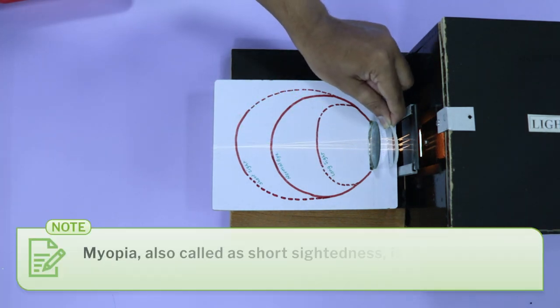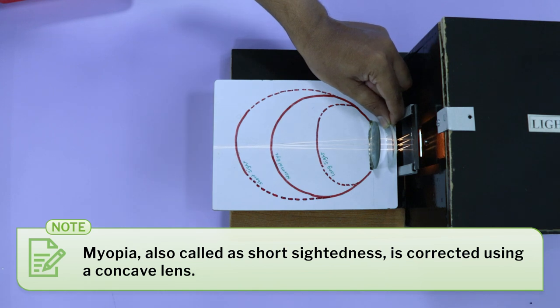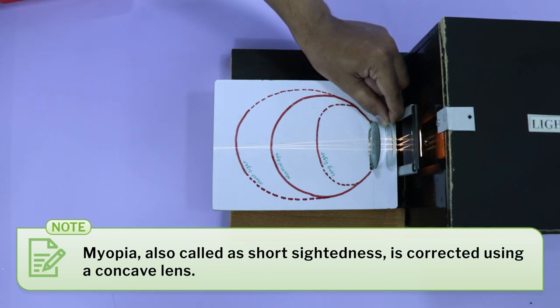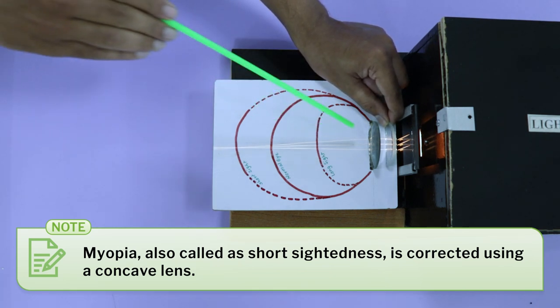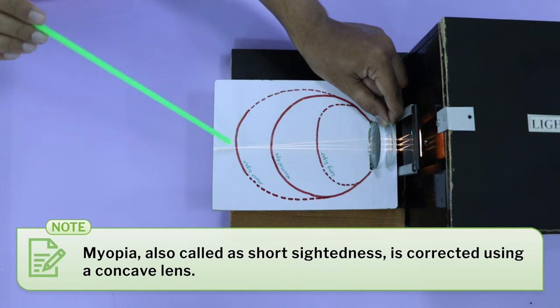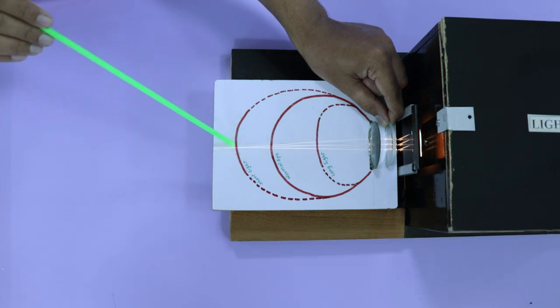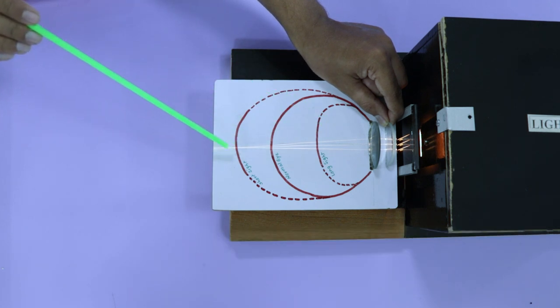In the case of myopia, the retina is farther than the focal length of the lens, and we can show how a concave lens is used to correct for this defect. These models allow students to visualize what is happening in eyes with these defects. How the combination of lenses works was also revised.